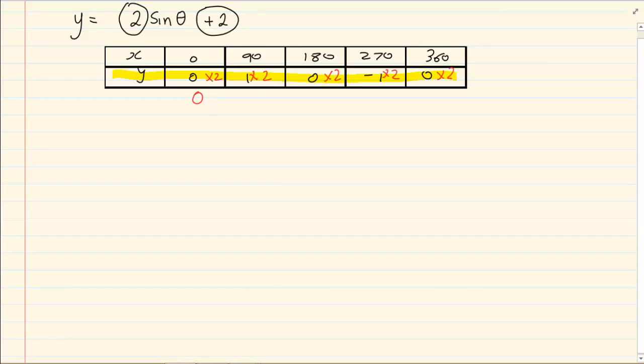So 0 times 2 is 0, 1 times 2 is 2, 0 times 2 is 0, minus 1 times 2 is minus 2, 0 times 2 is 0. Now we are going to add 2. So we now have 2, 4, 2, 0 and 2.